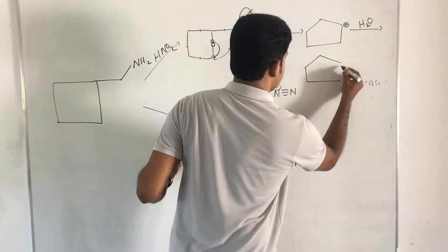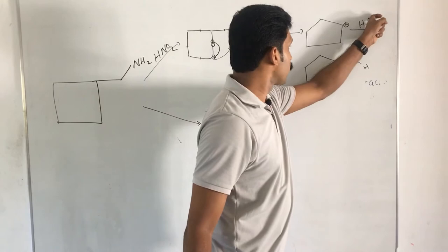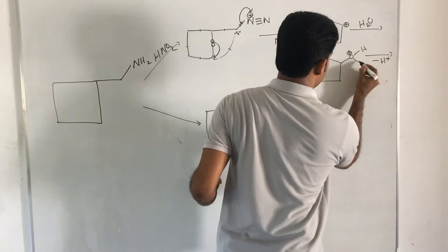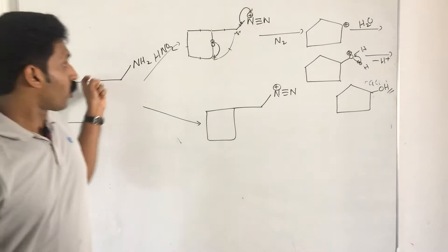In the next stage, water (H2O) is added. The oxygen carries a positive charge because the bond is formed by the lone pairs of the oxygen atom. In the last stage, minus H⁺, and finally you will get an alcohol. This is one of the pathways the molecule undergoes.